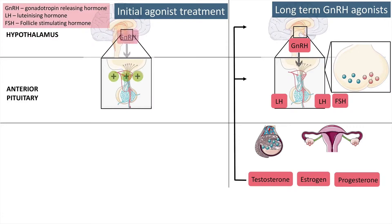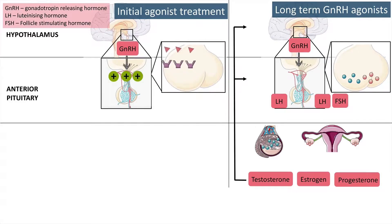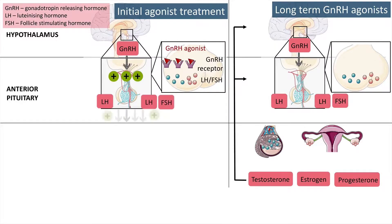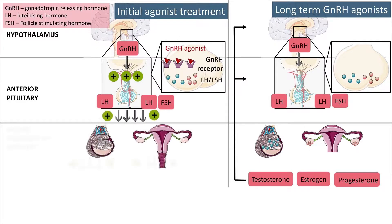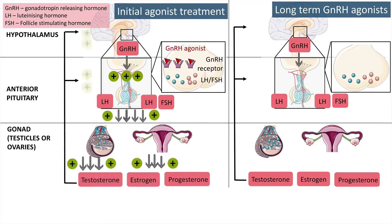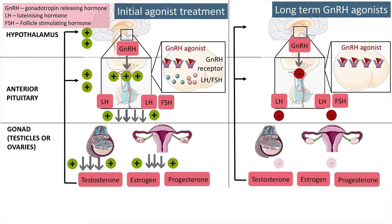With GnRH agonists, there is initially an overstimulation of the GnRH receptors, which leads to an increase in LH and FSH, and estrogen and testosterone. Chronic administration eventually leads to the suppression of LH and FSH, resulting in the suppression of sex hormone production.